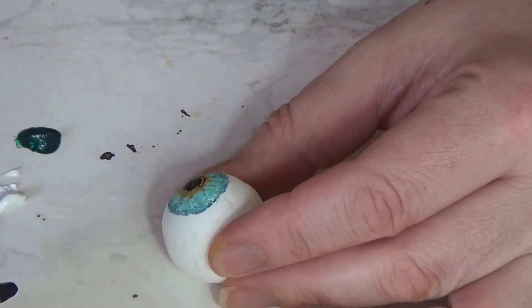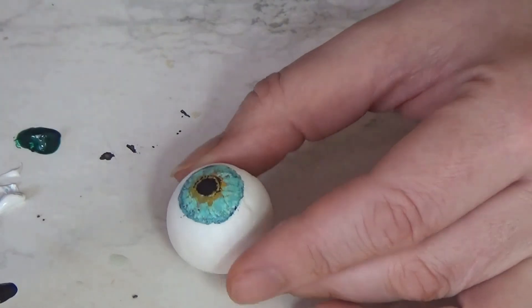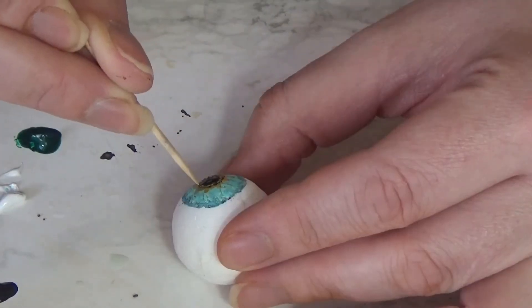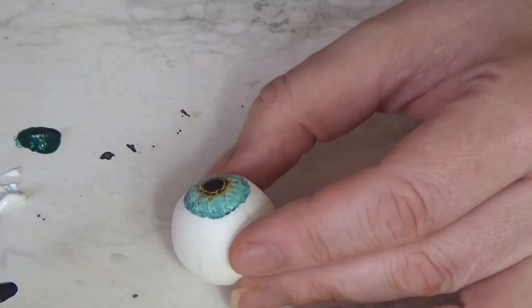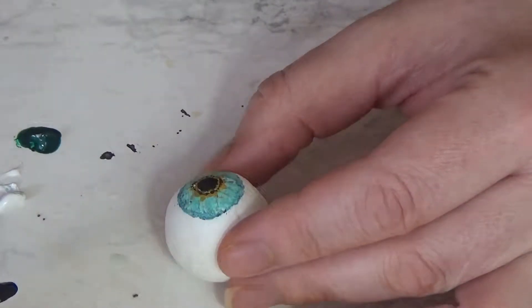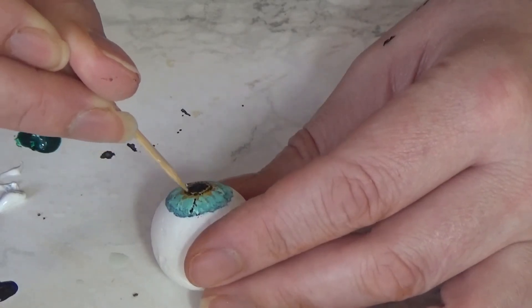Step four: you want to add some more detail. I noticed from looking at some close-up pictures of eyes that they tend to have this little black line around the pupil as well. I used a cocktail stick for this because I didn't have a brush that was anywhere near fine enough.